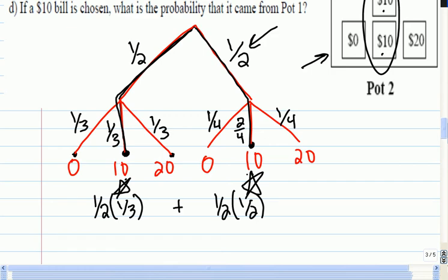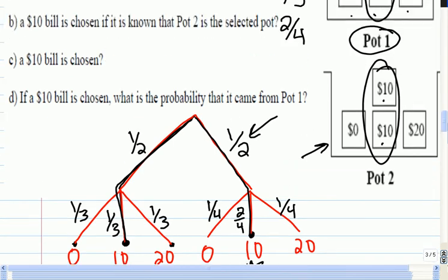Okay. So when you say it in your head, it's a $10 bill was chosen from pot one, or a $10 bill was chosen from pot two. So we're gonna be adding those up. Okay. So if I add those two together, that's one-sixth and one-quarter. We get five out of twelve, I believe. Okay. So, in general, there's a five in twelve chance of picking a $10 bill.